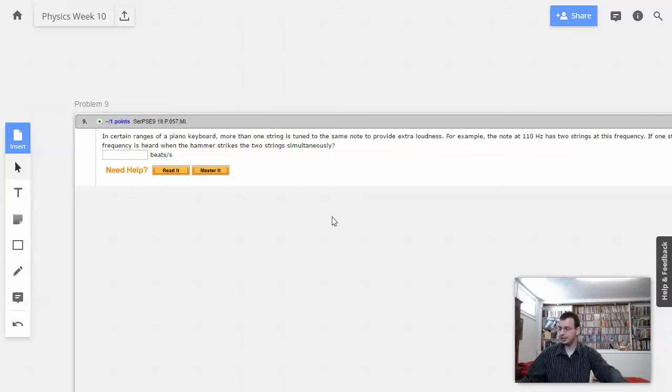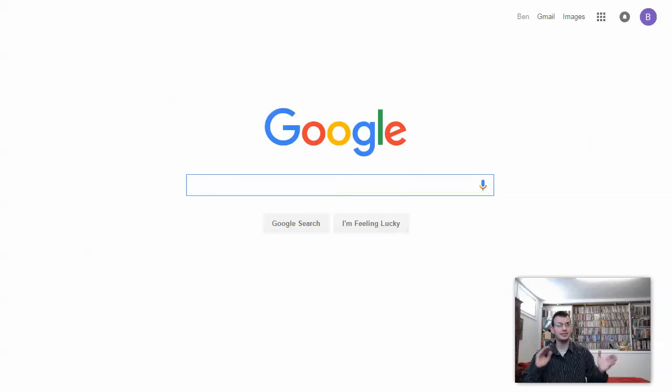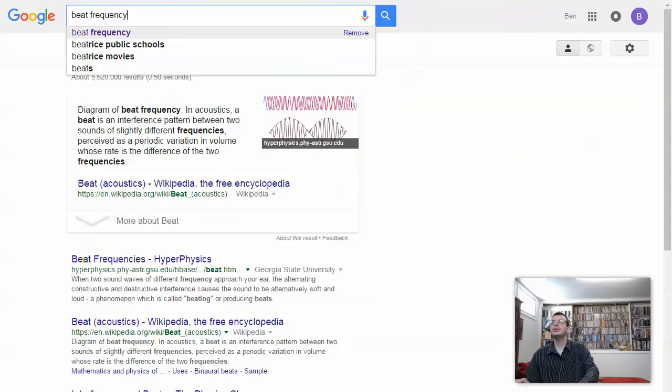Alright, so the idea here is beat frequency. Beat frequency is just the difference between two frequencies. When you have the difference between two frequencies, you're going to get constructive and destructive interference, and that's going to be based on the frequency. That's beat frequency.